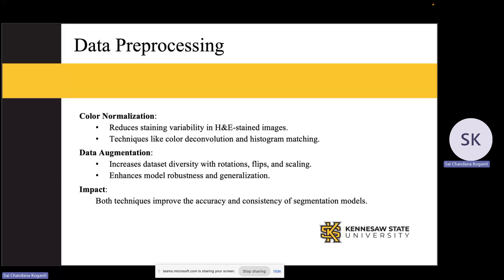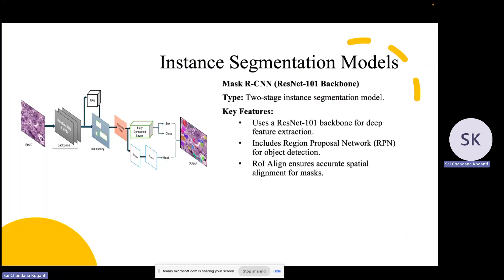Now let's look at the models I evaluated. The first is Mask R-CNN, which is a two-stage model that uses a ResNet-101 backbone for deep feature extraction. It has a Region Proposal Network, or RPN, which detects objects, and a region of interest mechanism that ensures accurate alignment of the segmented regions.